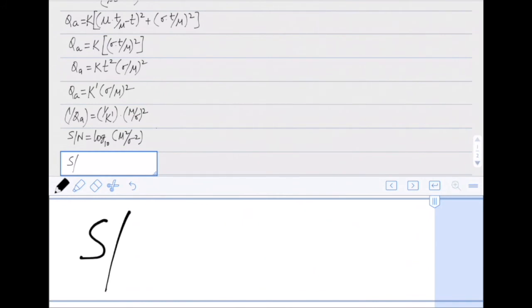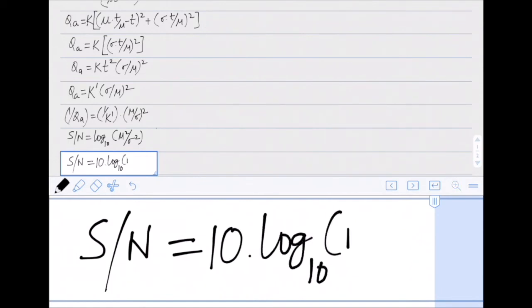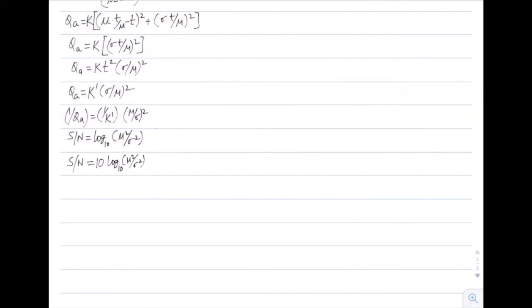So finally, the equation becomes signal to noise ratio given by 10 times log base 10 (mu square/sigma square). So I hope this makes it clear as to how this formula came into use.